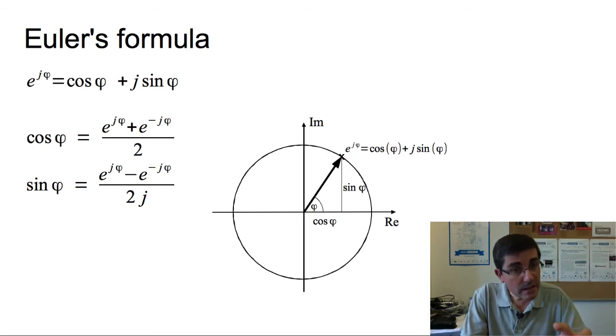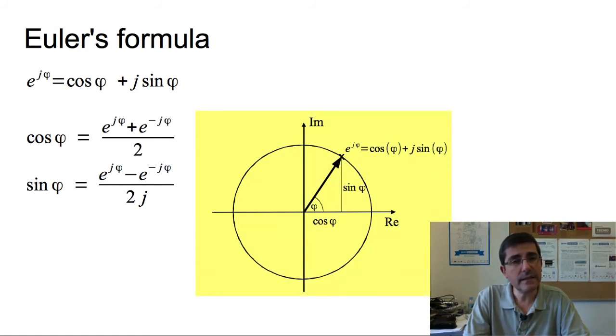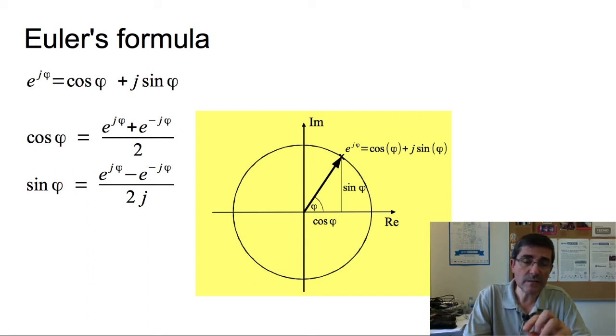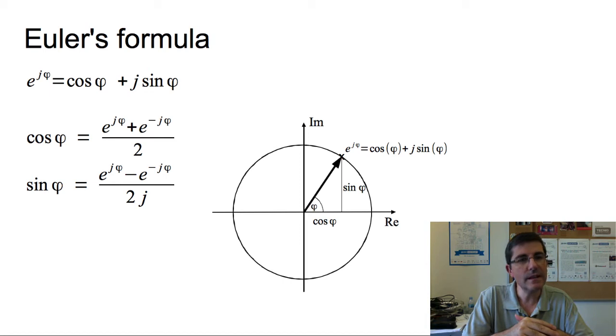If we show this in the complex plane, in this diagram that we show here, we can see these components that we mentioned. So, we see the complex value as the e to the j phi, which since has magnitude 1, is in the unit circle. And we can see the real part and the imaginary part, one being the real part, cosine phi, and the imaginary part being sine phi. So, this formula will be fundamental to understand the discrete Fourier transform. So, we will come back to it later.